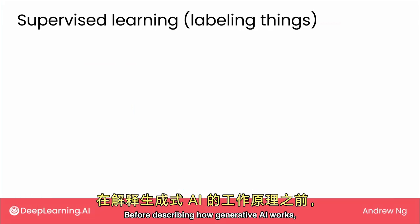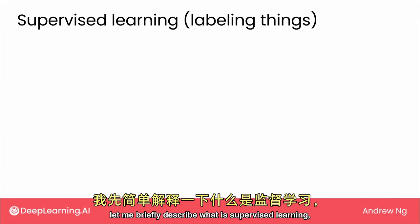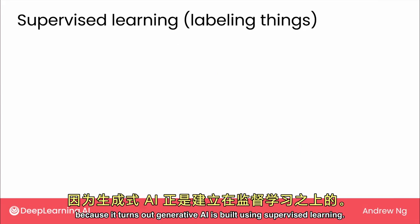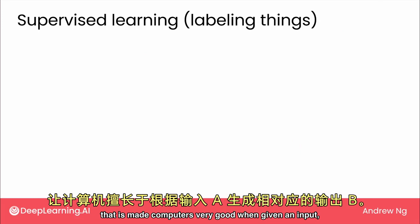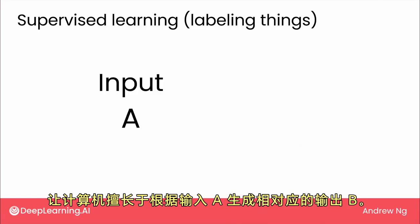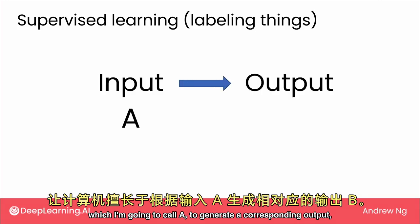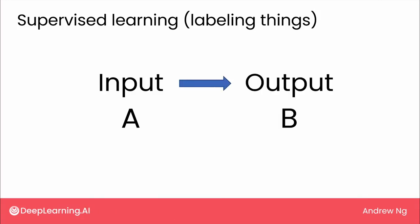Before describing how generative AI works, let me briefly describe what is supervised learning. Because it turns out, generative AI is built using supervised learning. Supervised learning is a technology that has made computers very good when given an input, which I'm going to call A, to generate a corresponding output, which I'm going to call B.